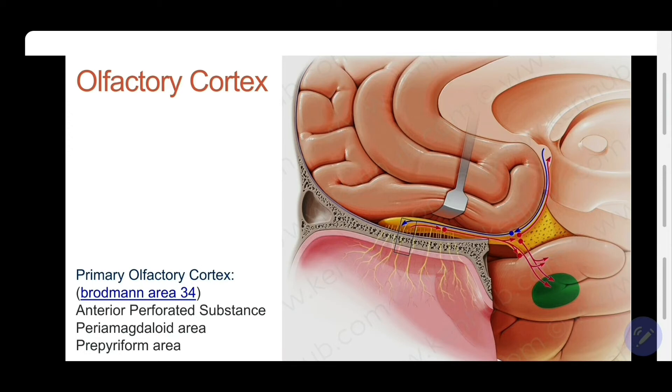Primary olfactory cortex, remember these three words: anterior perforated substance, the periamygdaloid area surrounding this, and the prepiriform area. These are small little gray nuclei embedded around the anterior perforated substance that form the primary olfactory cortex, and that is classified according to Brodmann's as area number 34 and even 28 is also included in this. So that's the primary olfactory area.